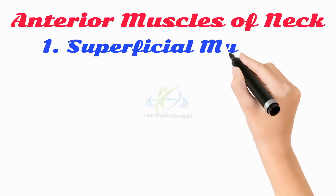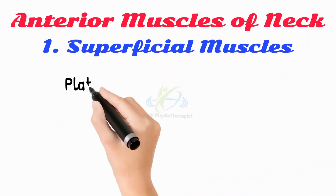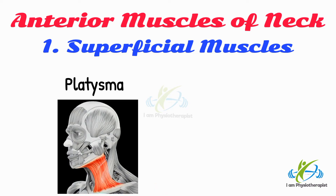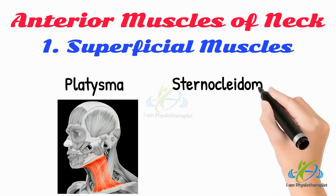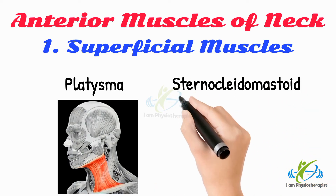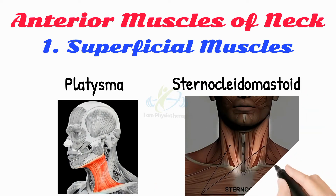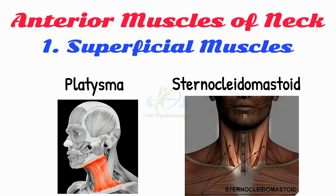Superficial muscles include the platysma and sternocleidomastoid. The platysma functions mainly as a muscle of facial expression. For example, it contributes to producing an expression of sadness by pulling the corners of the mouth inferiorly.